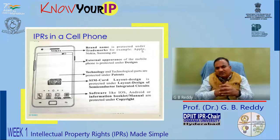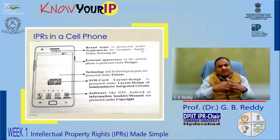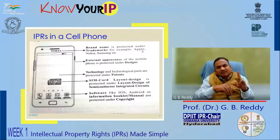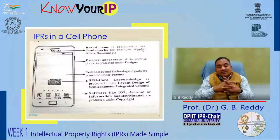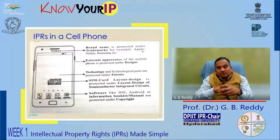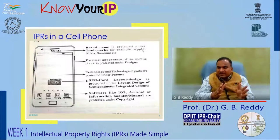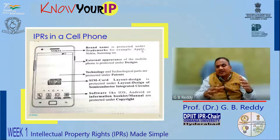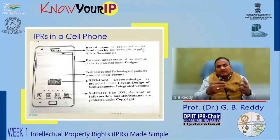Intellectual property is not on the cloud — it is in your hand, in my hand. When we look at any cell phone, you come across at least five different kinds of intellectual property. A brand name — Nokia, Apple, Samsung — is protected under trademark. The external appearance is registered as a design; Samsung's design is different from Apple's, which is different from MI's design. Any technology used in the cell phone is protected under patents — there are patent wars between Samsung and Apple in more than 40 countries over standard essential patents. The SIM card reflects a layout design or semiconductor and integrated circuit design, and the operating systems like Android, iOS, and software are protected under copyright.